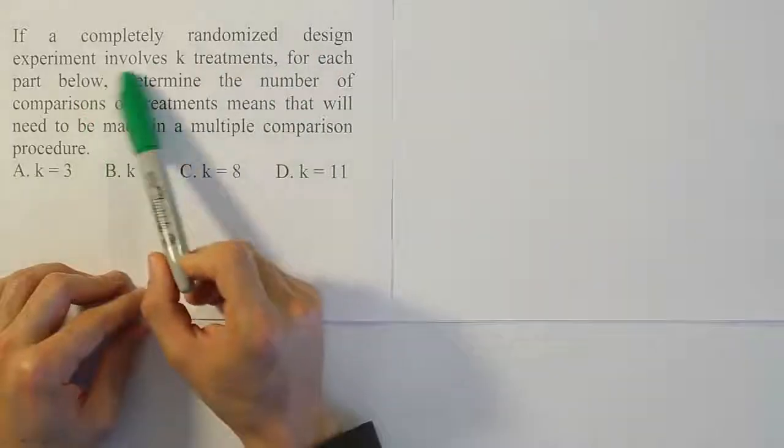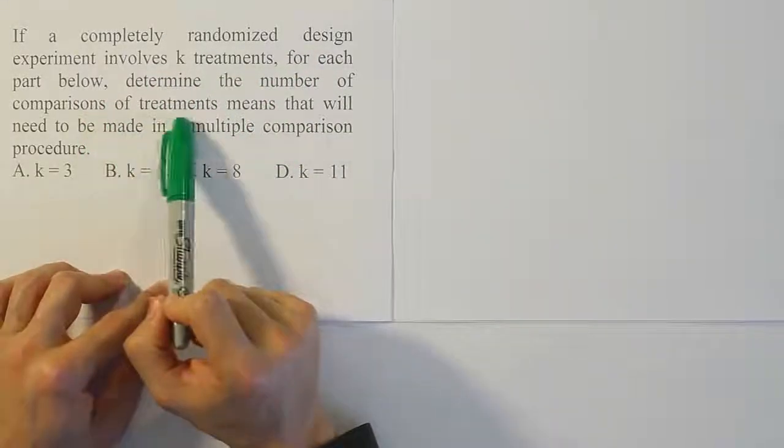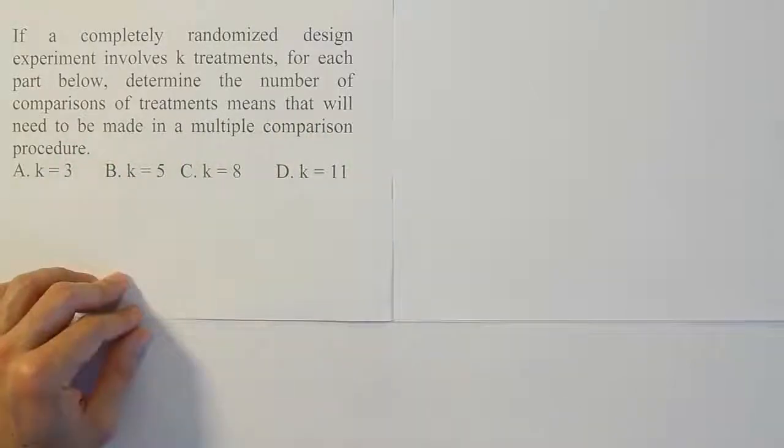If a completely randomized design experiment involves k treatments, for each part below, determine the number of comparisons of treatment means that will need to be made in a multiple comparison procedure.